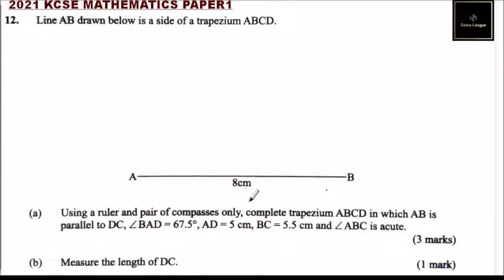Part A, using a ruler and a pair of compasses only, complete trapezium ABCD in which AB is parallel to DC, angle BAD is equals to 67.5 degrees, AD is equals to 5 cm.